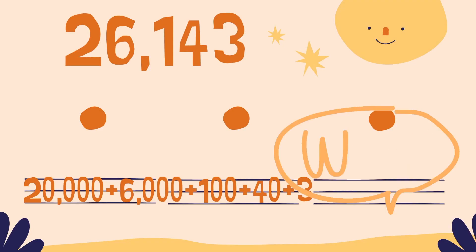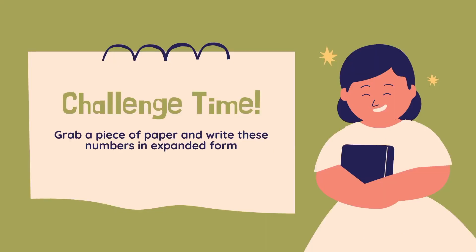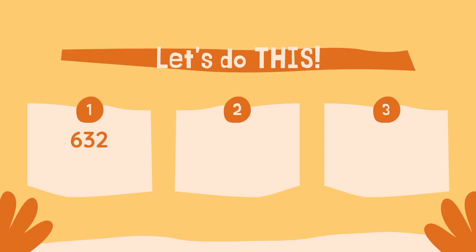Wow, that was a long one! But I do think you're ready for the next super duper challenge time. Grab a piece of paper and write these numbers in expanded form. Number one: 632. On your paper, write down what that would look like in expanded form.